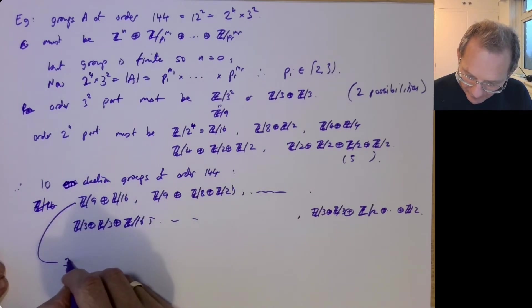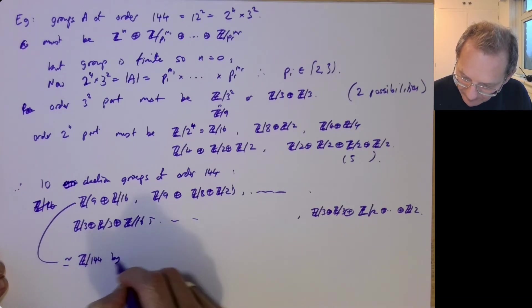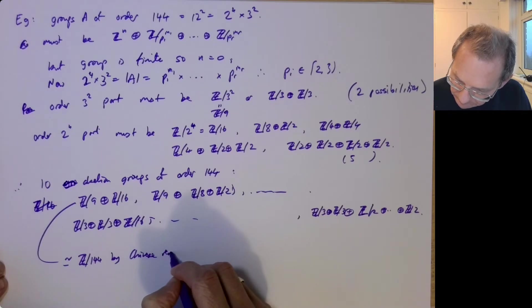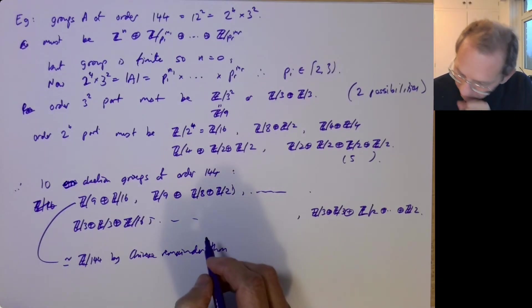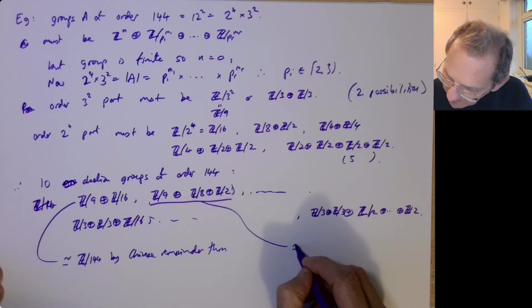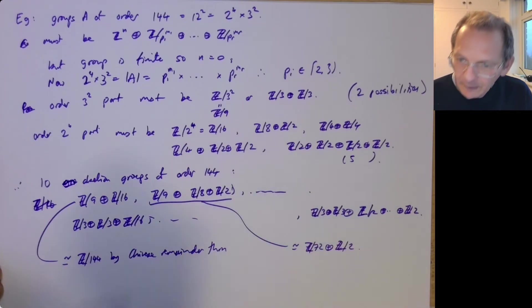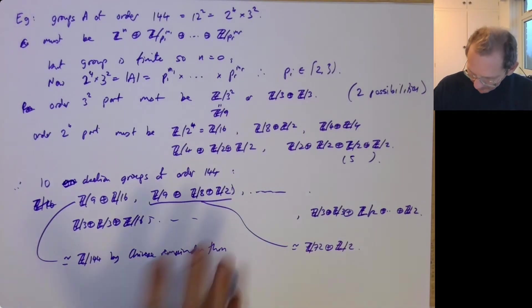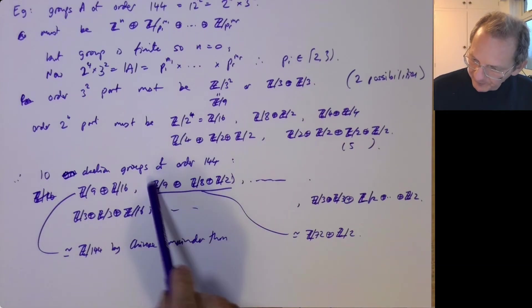So these are all possible abelian groups of order 144. And notice that this one, for example, this one is isomorphic to Z mod 144 by the Chinese remainder theorem. This one, for example, we could write as Z mod 72 plus Z mod 2. Using the Chinese remainder theorem, we can rewrite these things in various different ways. But if we write it with prime power orders, which is kind of a canonical thing to do, then we get this list that we write out here.